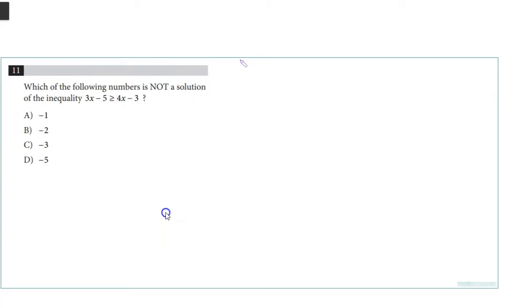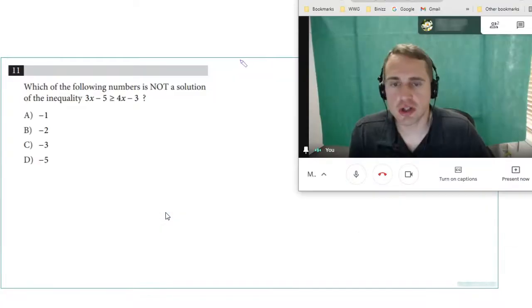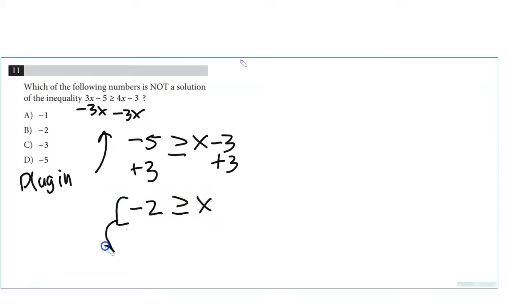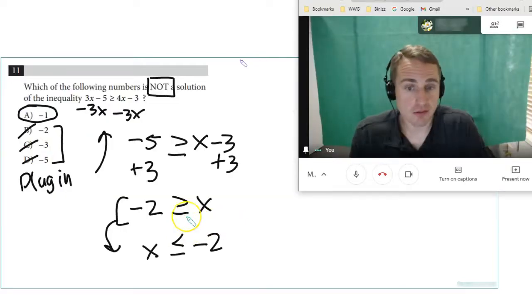Number 28: Which of the following is not a solution to this inequality? We could just plug them in, but if it's easy enough to solve, I would solve for x. Subtract 3x from both sides. We've got negative 5 greater than or equal to x minus 3. Add 3 to both sides. That's negative 2 greater than or equal to x. Which is more easily read as x has to be less than or equal to negative 2. Now remember, the word 'not' is used here. So any value less than negative 2 is a solution or equal to negative 2. But this, this, and this are all less than or equal to negative 2. So that means this is the answer: negative 1.